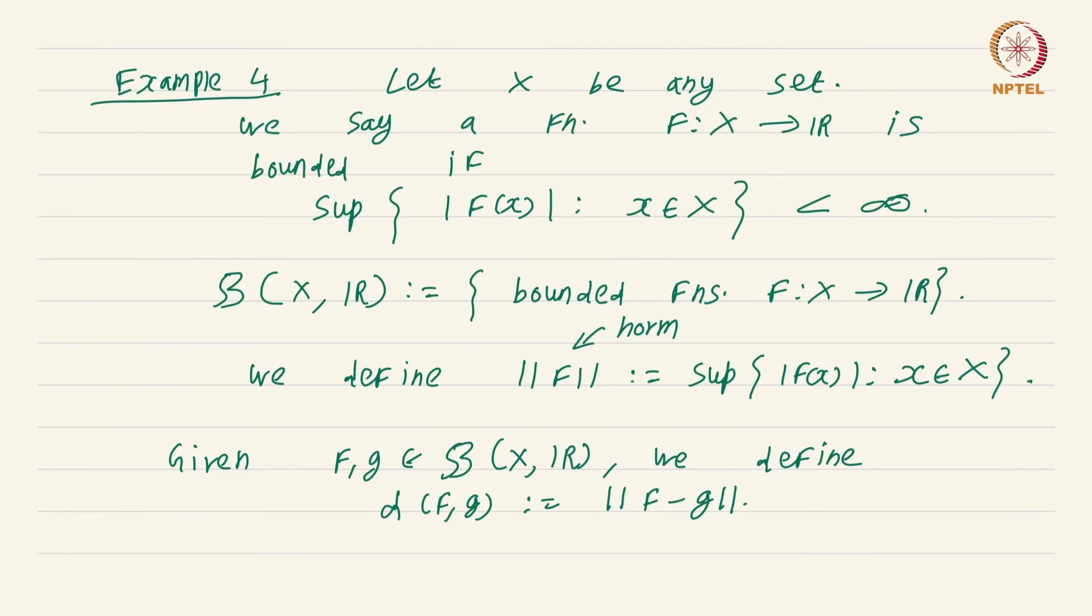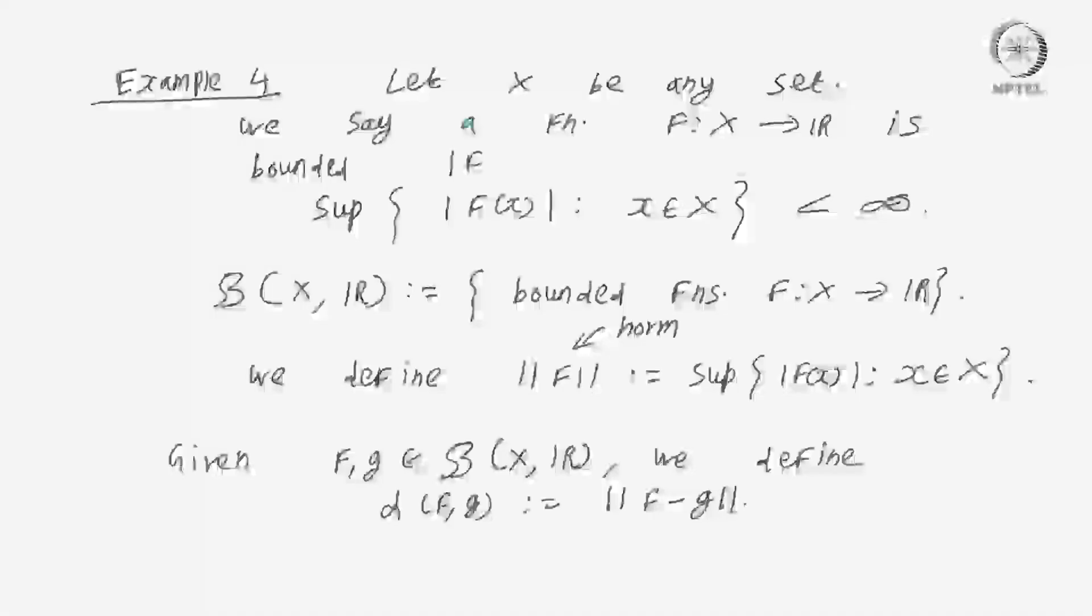Check that this example satisfies all the properties needed to make this into a metric space. It is rather easy to check. The only non-difficult thing is the triangle inequality, which itself is not actually difficult, it is quite straightforward. We will spend a considerable amount of time analyzing this particular metric space. It is going to take up most part of an entire week of our lectures.